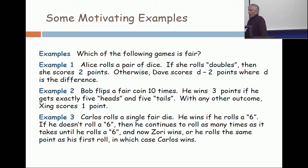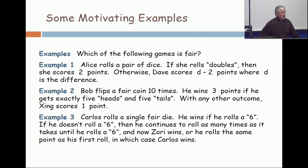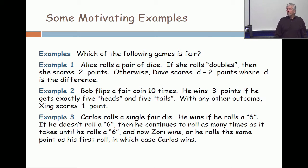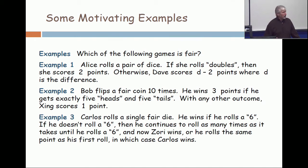Carlos is playing against Zori. Carlos does the rolling; Zori is passive — she either wins or loses based on what Carlos does. She wins when Carlos loses. Who's in the winning position, Carlos or Zori? Out of the three examples, this one is distinguished in that there are infinitely many possibilities, though it's actually a little bit easier to see who is in the winning position.